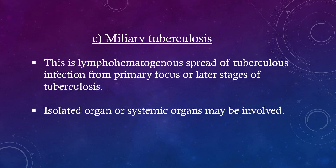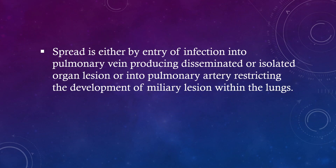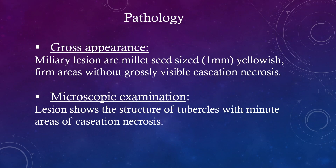Miliary tuberculosis: This is the lymphohematogenous spread of tuberculosis infection from the primary focus or later stages of tuberculosis. Isolated organ or systemic organs may be involved. Spread is either by entry of infection into the pulmonary vein, producing disseminated or isolated organ lesions, or into the pulmonary artery, restricting the development of miliary lesions within the lungs.